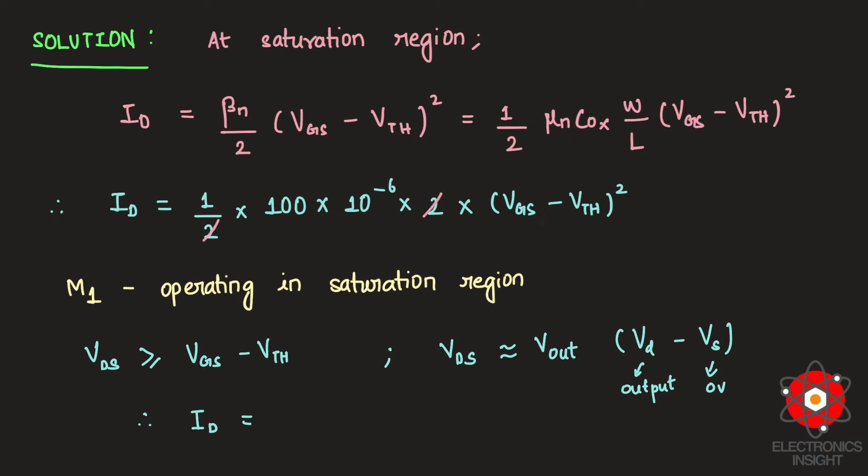So this becomes 100 × 10⁻⁶ will become 10⁻⁴ × Vout². Let this be equation 1.